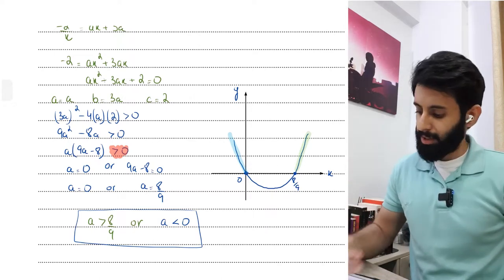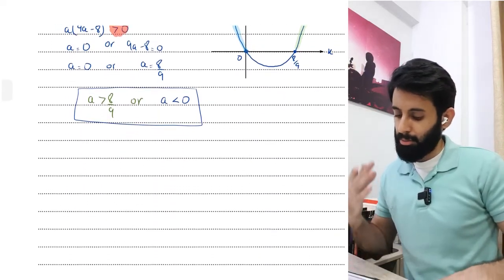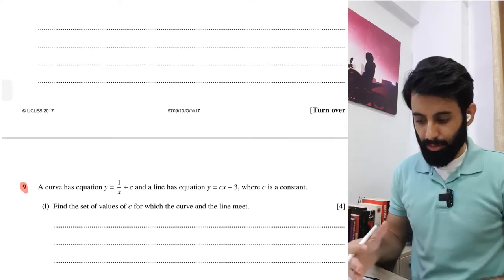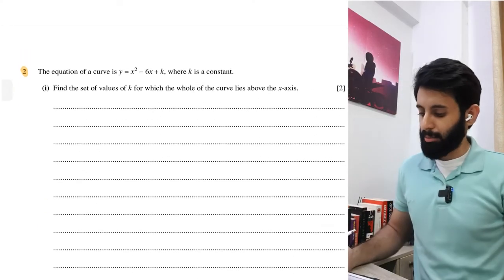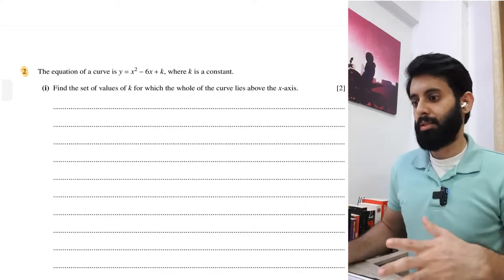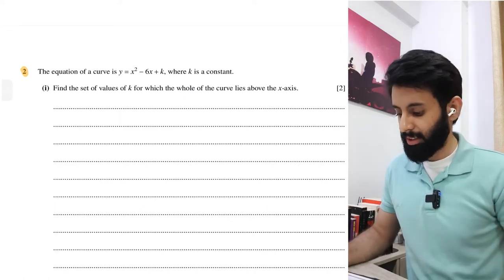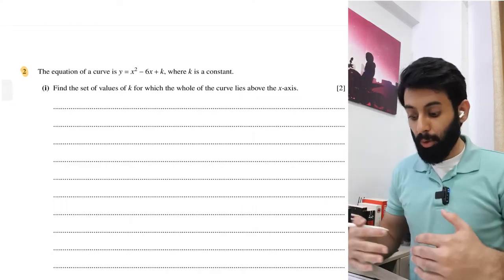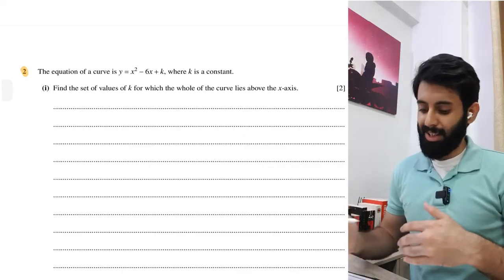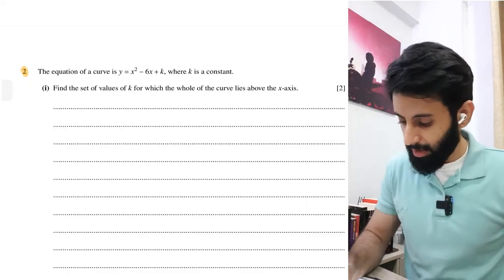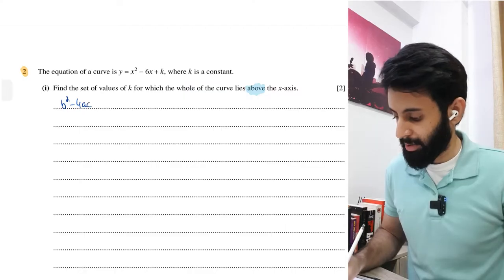I've discussed this in more detail in the notes. I've also made a whole playlist on quadratic equations for A-level math - if you wish to revise quadratic inequalities I'd strongly suggest checking it out. Now, question 2 is highlighted orange, meaning discriminant applied to the curve and x-axis. It says: the equation of the curve is y = x² - 6x + k where k is a constant. Find the set of values of k for which the whole curve lies above the x-axis.